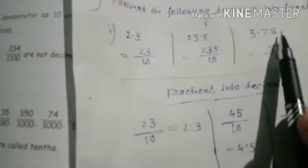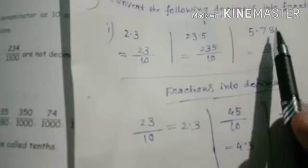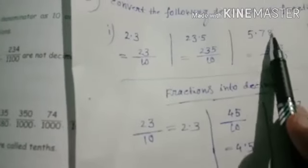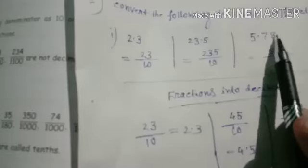Next, 5.78. From the right side, count - there are 2 digits after the point. So this equals 578 over 100.